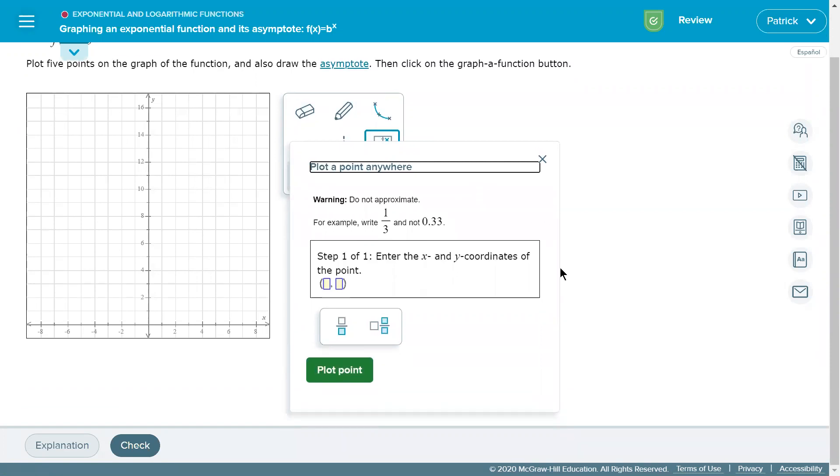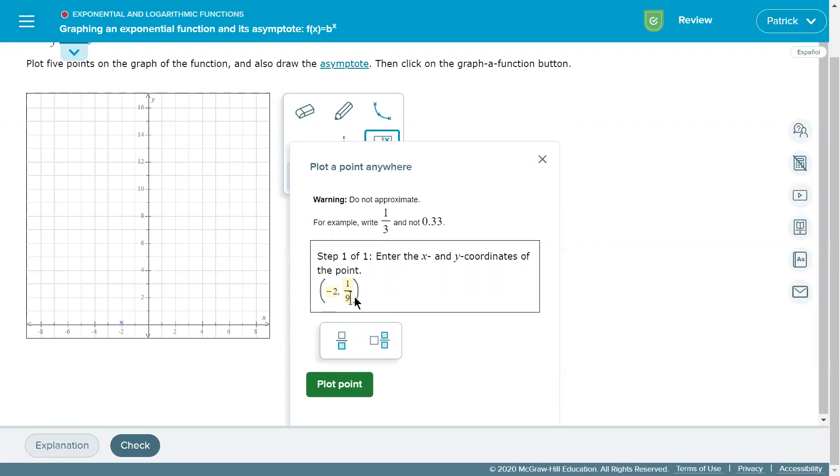I'll scroll down a little bit so you can see the whole thing, and we just click in here, and my first point had an x coordinate of negative 2 and a y coordinate of 1/9th.